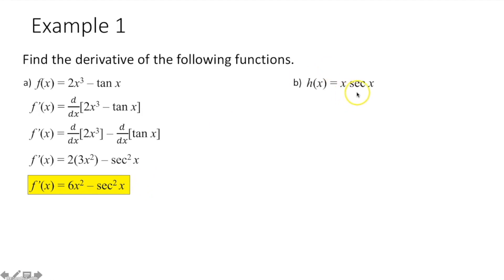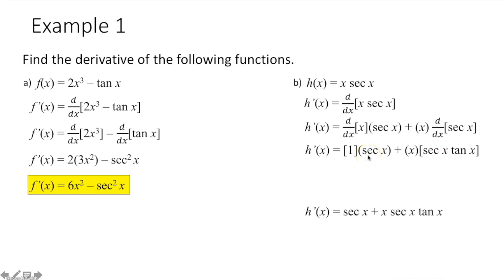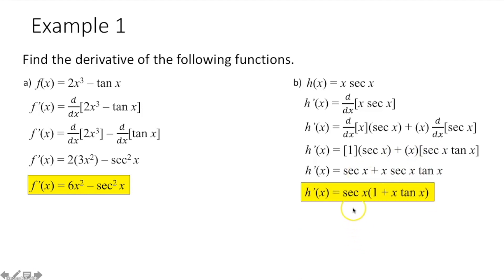For part b, we have the function x times secant x — two functions multiplied together, so we need the product rule. That's the derivative of the first function x times the second function secant x, plus the first function x times the derivative of the second function secant x. Derivative of x is 1; derivative of secant x is secant x tangent x. Simplifying, we get secant x plus x times secant x tangent x. Each term has a secant x, so we factor it out and write the answer as secant x times the quantity (1 plus x tangent x).